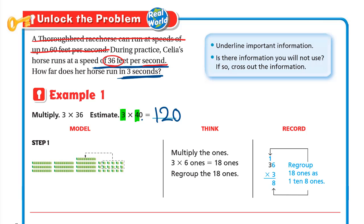We write 36 on top and 3 below. First, multiply 3 by the ones digit: 3 × 6 = 18. We write the 8 down and carry up the 1, just like in addition. So we write the 8 and carry the 1 up.